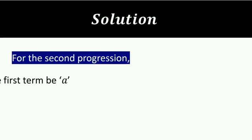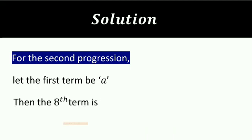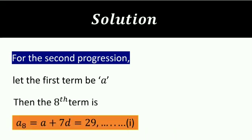For the second progression, let the first term be A. Then eighth term is A plus 7D is equal to 9. That has been given. Let this be equation 1.